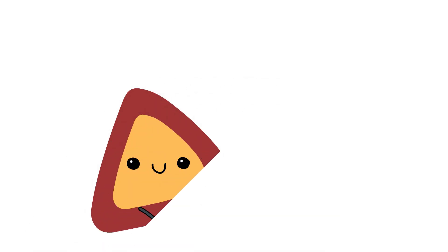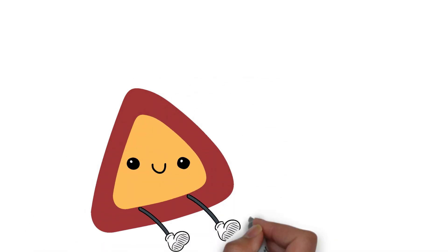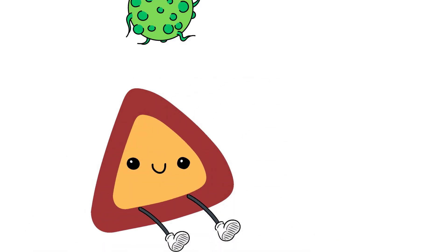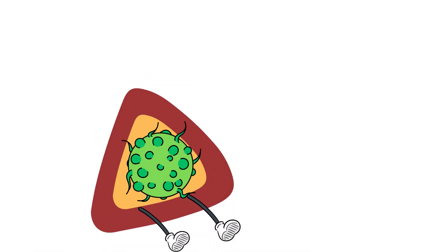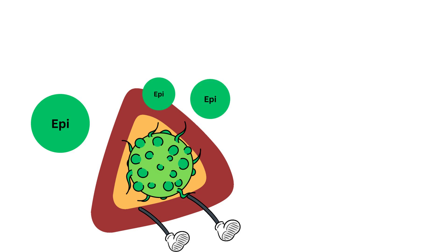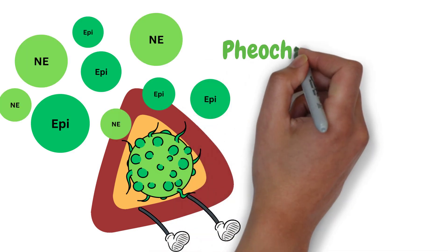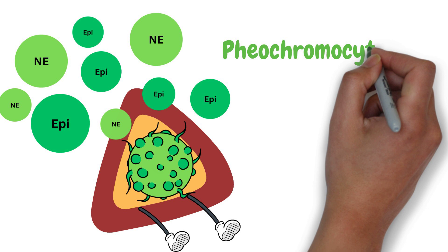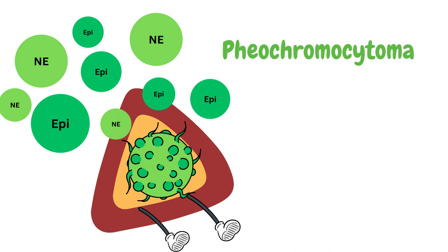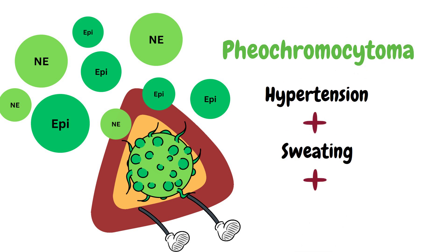An excessive production of catecholamines such as epinephrine and norepinephrine by a tumour in the adrenal medulla is called pheochromocytoma. This can lead to episodes of hypertension, sweating, and palpitations.